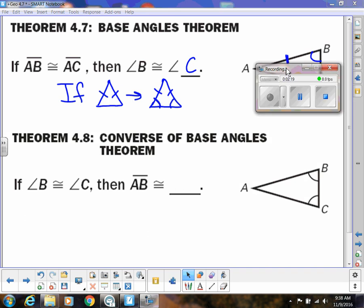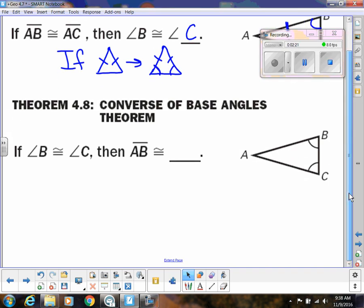Then the converse of that, we're just going to be switching that up. So now, what I'm going to know first is that the base angles are congruent. So angle B is congruent to angle C. If that's the case, then I know AB, which is the leg, is congruent to AC, which is the other leg.